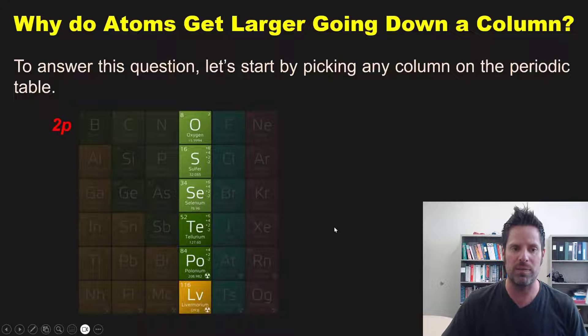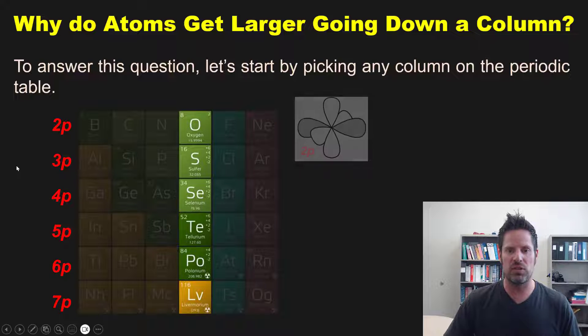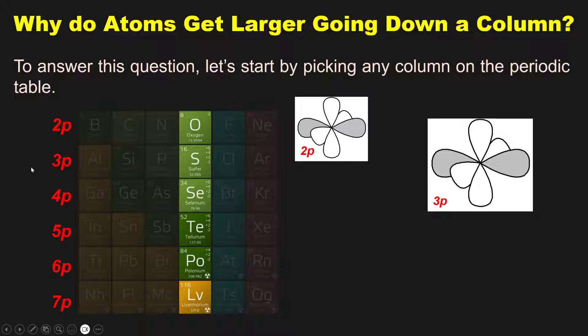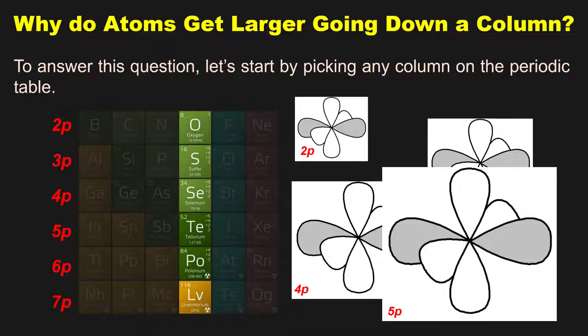For sulfur it's going to be 3p, selenium is 4p, tellurium is 5p, and so forth down to livermorium. Now what do we know about the relative sizes of these orbitals? Well, 2p orbitals, which are three dumbbells straddling the nucleus of that oxygen atom, are going to be smaller than 3ps, which will be smaller than 4ps, which will be smaller than 5ps.